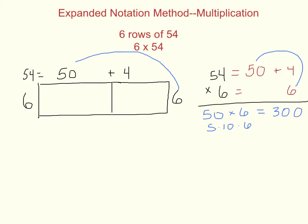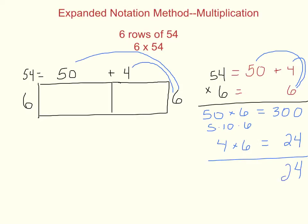Next, we take that ones place, 4, and multiply it by 6. On the right side, it might look that way. The nice thing about 4 times 6 is it's a math fact — four groups of 6 is 24. So now we have the product of the tens place in the 54, the product of the ones place, and it's as simple as adding those to get our total product.